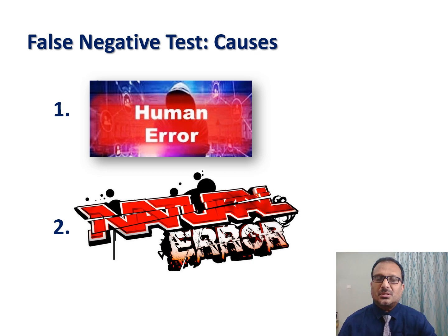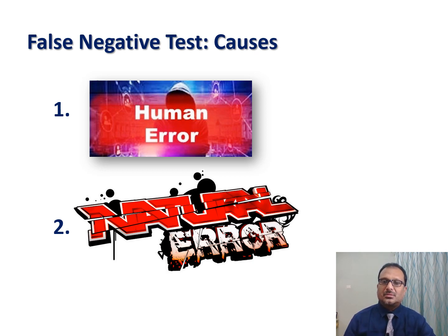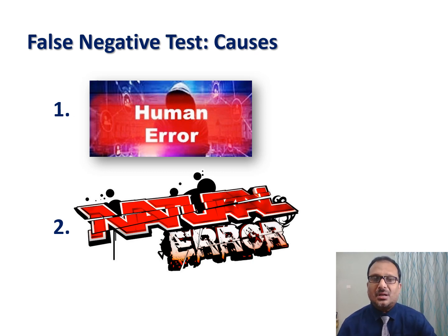What are the causes for this false negative test? There are two categories: human error and natural error. We will now look at what the possible human errors and natural errors are in detecting COVID-19 by means of RT-PCR testing.